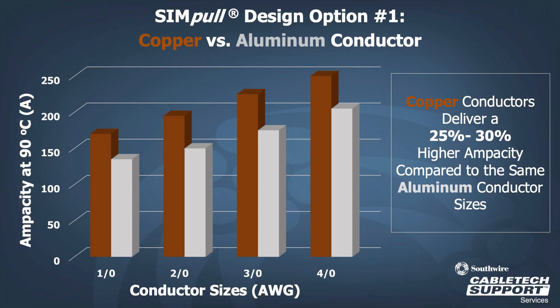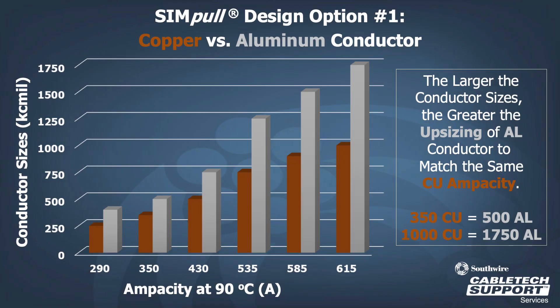For an aluminum conductor to carry the same ampacity as a copper conductor, the aluminum conductor would need to be upsized. Copper conductors deliver 25 to 30% higher ampacity compared to the same size aluminum conductors, depending on the size of the conductor. In this graph we can see that larger conductor sizes require upsizing aluminum conductors to match the same copper ampacity. A 350 kcmil copper conductor and a 500 kcmil aluminum conductor have equal ampacities — essentially, the aluminum conductor is two sizes larger than the copper conductor.